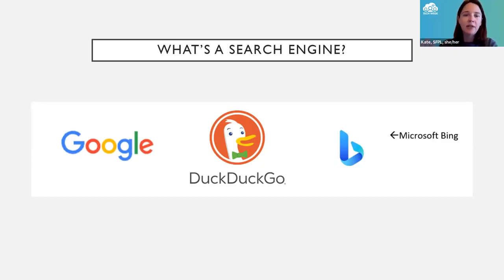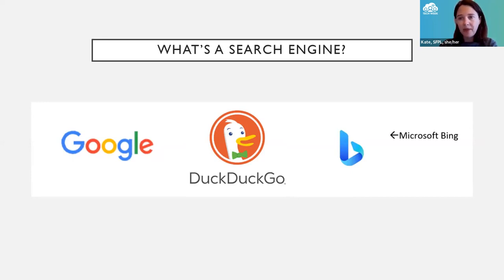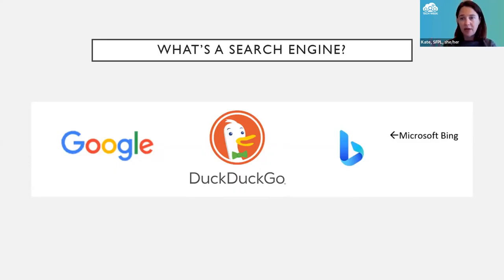Today we're not going to talk about Microsoft Bing — you can try it if you want. We're going to talk a little about DuckDuckGo. Most of the tips and tricks we'll cover today do apply to Google, and probably a lot of you are already using Google. But it's worth knowing that there are different search engines out there, and depending on where you are or the defaults in your browser, you could be using a different one.